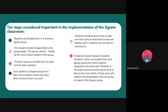These are the 10 steps considered important in the implementation of the Jigsaw group. First, students are divided into five or six person Jigsaw groups. Jigsaw works best when you have the same number of students in each group.